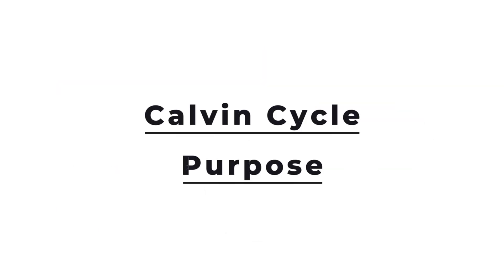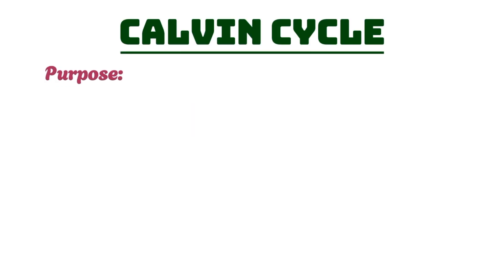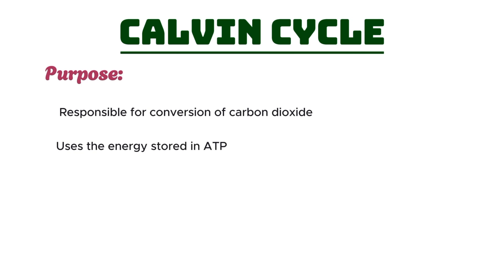At its core, the Calvin Cycle is responsible for converting carbon dioxide into glucose, a vital energy source for plants and the organisms that consume them. It uses the energy stored in ATP and NADPH, produced in the light-dependent reactions, to power this transformation. The end result is glucose, a simple sugar that plants use for energy and growth, and that ultimately fuels almost all life on Earth.